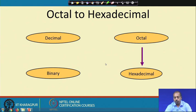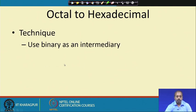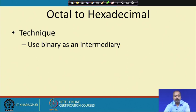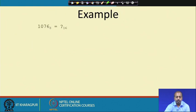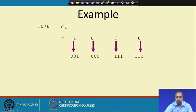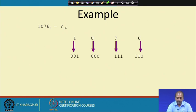How to convert an octal number to hexadecimal? You can use a binary number as the intermediary. We convert the octal number to binary first, and from the binary number we convert to hexadecimal. For example, the octal number 1076 base 8 — since it is an octal number, individual digits can be converted into 3-bit patterns, giving the corresponding binary bits: 001000111110.